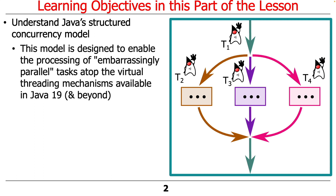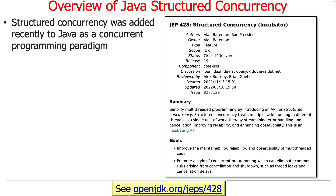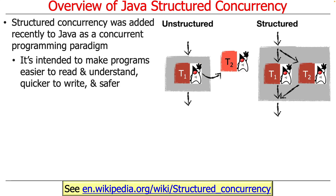So the Virtual Thread stuff was just kind of a trampoline to bounce us into a discussion of what we're really going to be doing. Structured Concurrency is a framework added to Java fairly recently. The specification was created in 2021, updated in summer of 2022, and is now available in Java 19 and beyond. The goal is to make it easier to develop concurrent programs that are easier to write, easier to understand, hopefully quicker to write, and ideally safer.